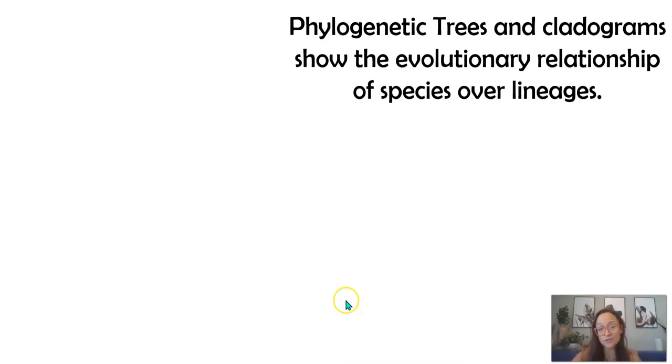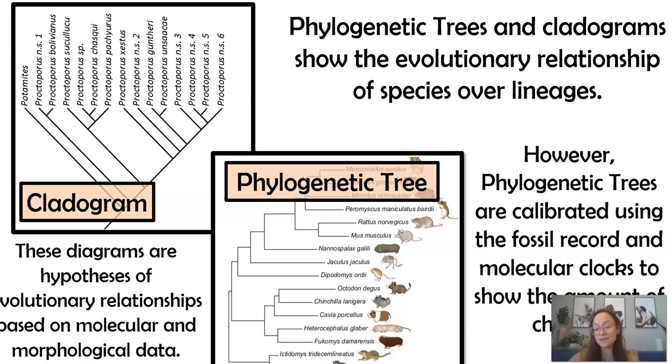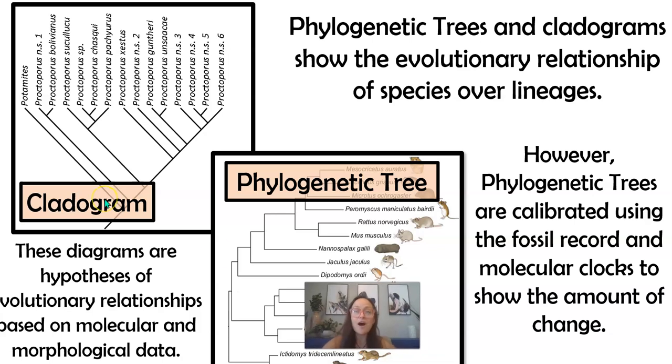Phylogenetic trees and cladograms both show the evolutionary relationship between species. Now we're going to talk about what all these branch points mean and how you understand them, but basically these phylogenetic trees and cladograms are hypotheses of how scientists think that the species evolved.